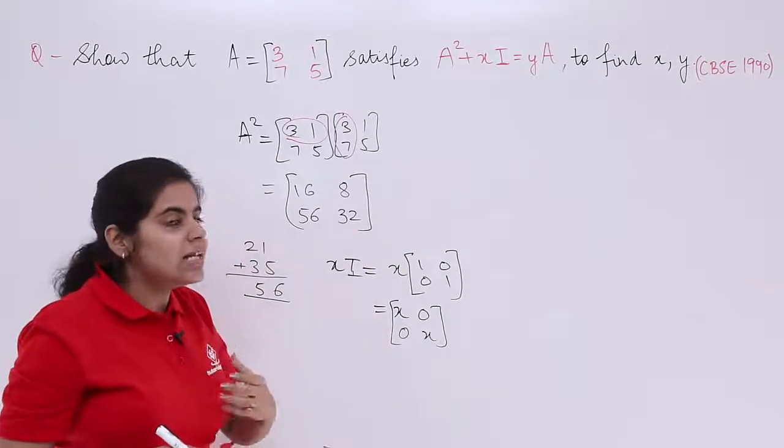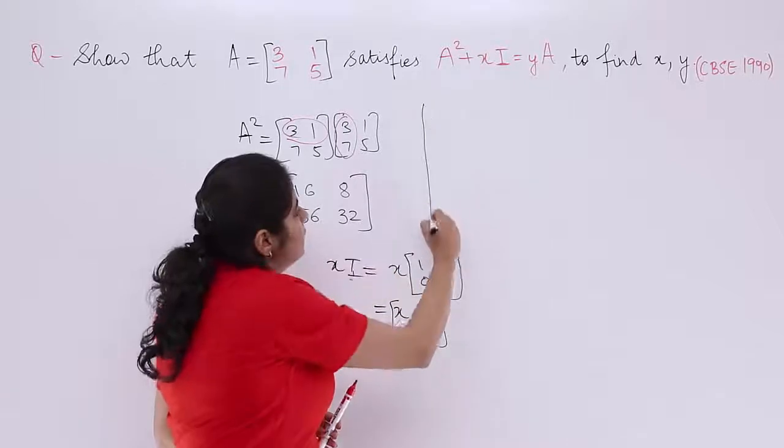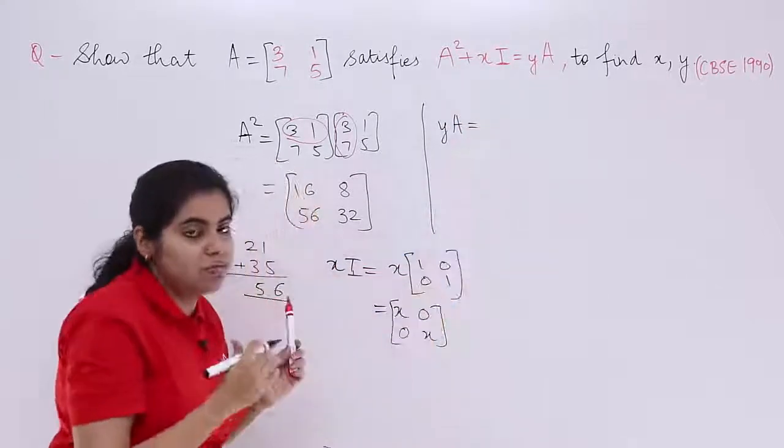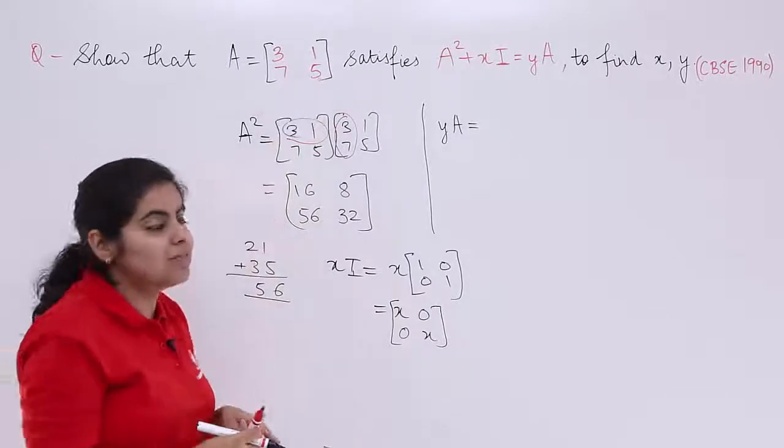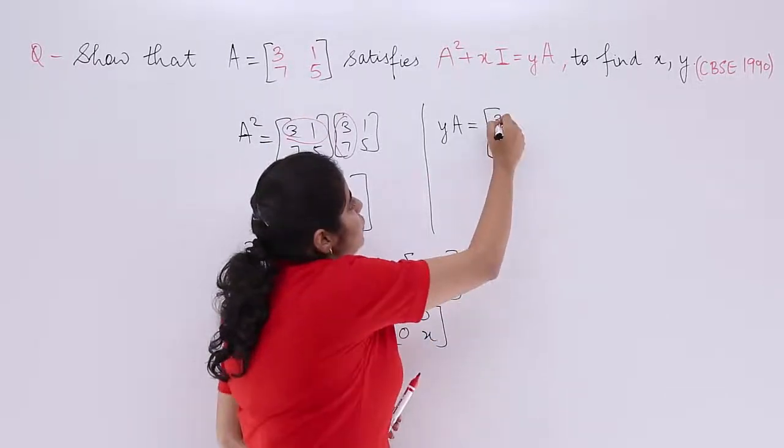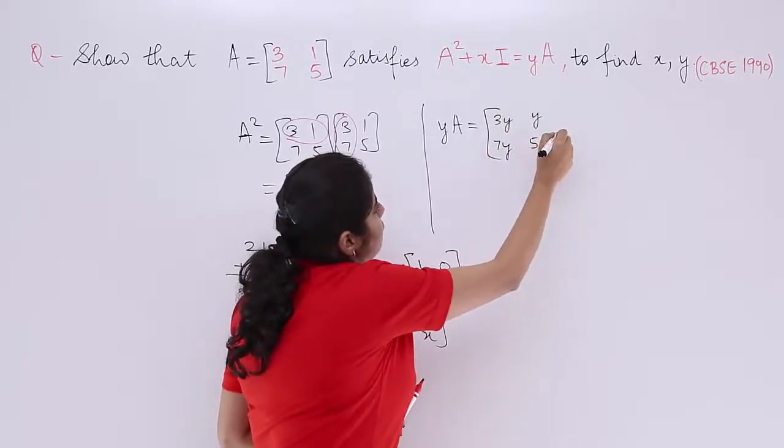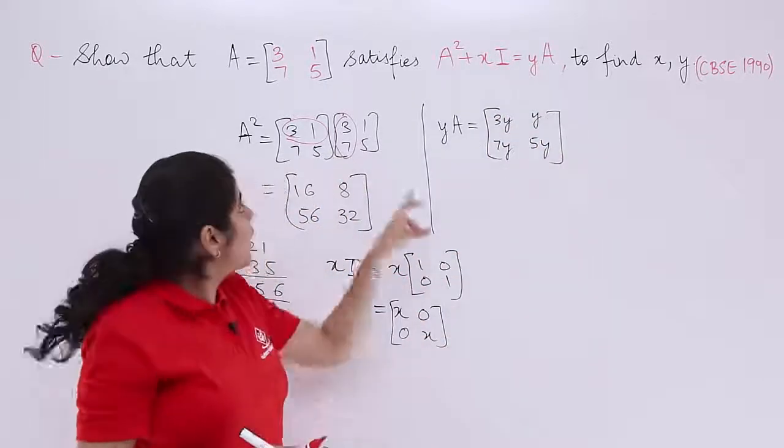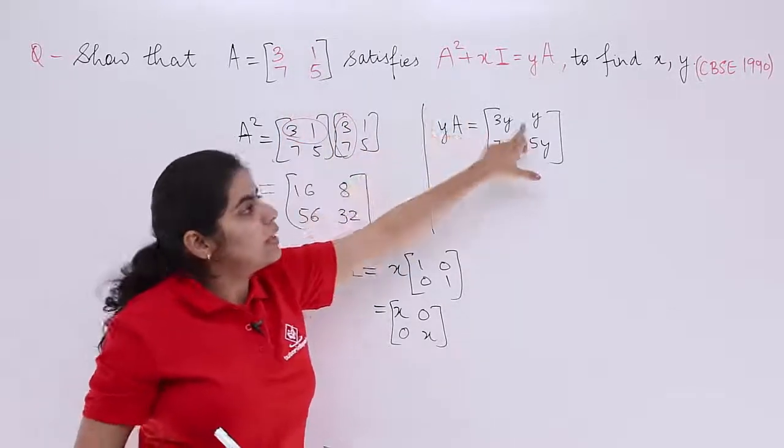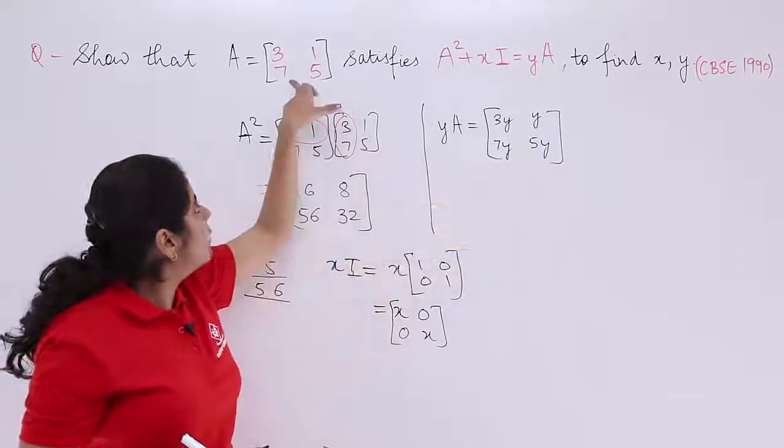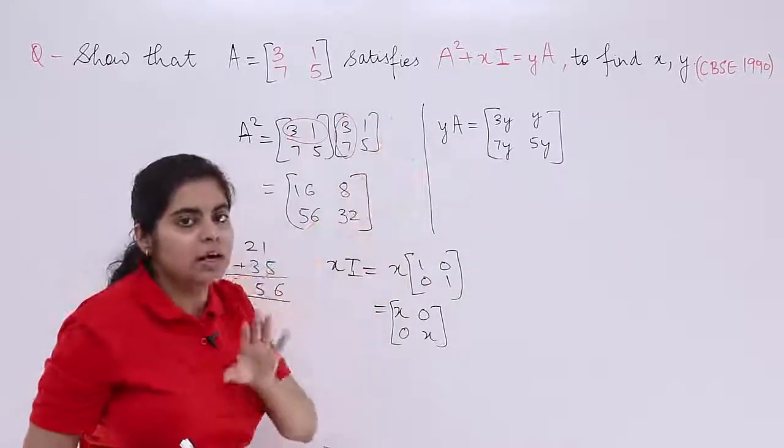Next task is what? Next task is to find Y A. Let's find out Y A. Y multiplied by A means Y multiplied by the matrix A. What is the matrix A? 3175. So it is 3175. 3 multiplied by Y is 3Y. Then Y multiplied by 1 is Y. Then Y multiplied by 7 is 7Y. Y multiplied by 5 is 5Y.